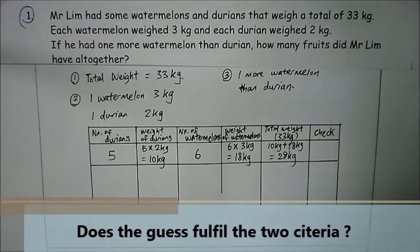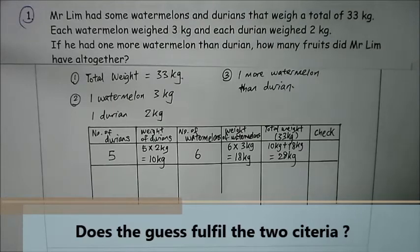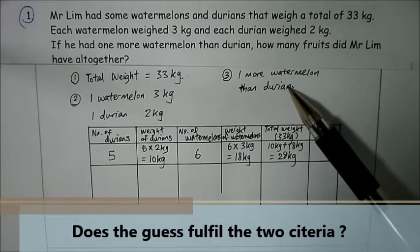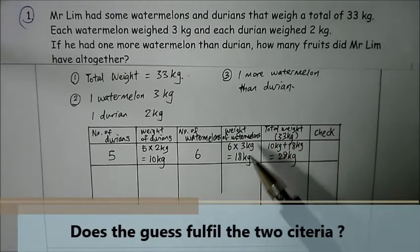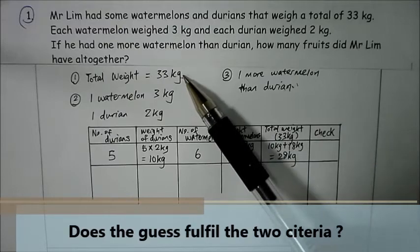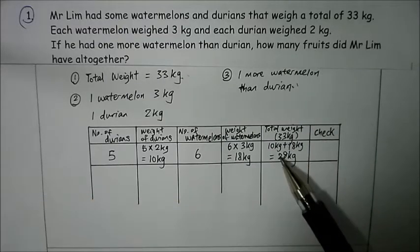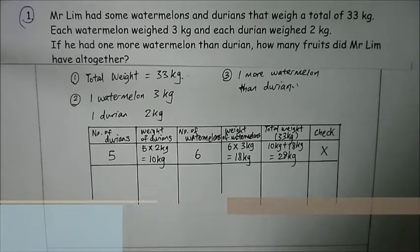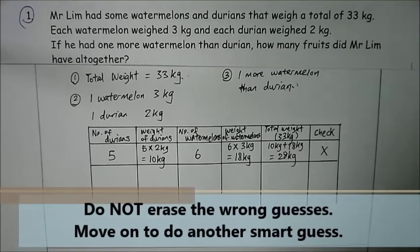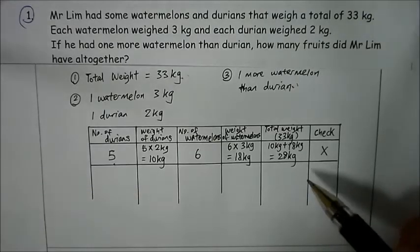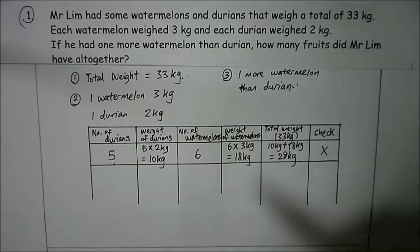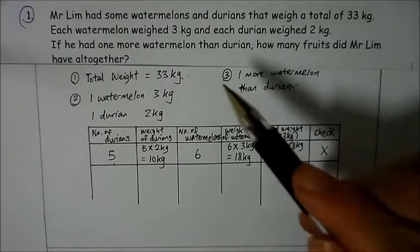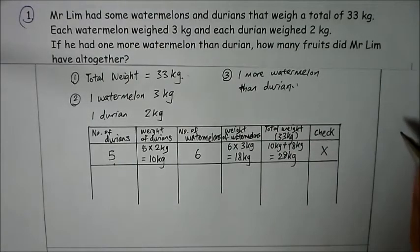Now, does this guess fulfill the two criteria? The total weight must be 33 kg, and there must be one more watermelon than durian. From this guess, we have fulfilled the second criterion but not the first, because the total is 28 kg, not 33 kg — so this gets a cross. Please note that for the guess and check method, we do not erase the working we have done. We need to increase the number of durians since 28 kg is less than 33 kg.